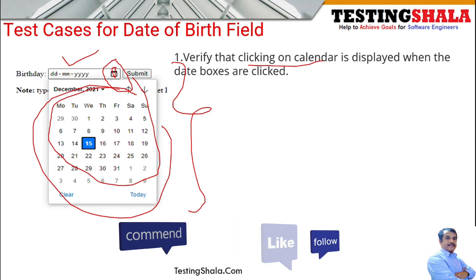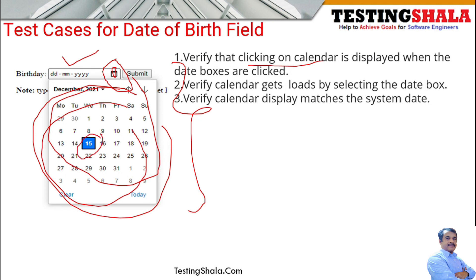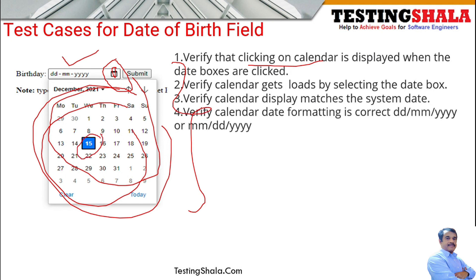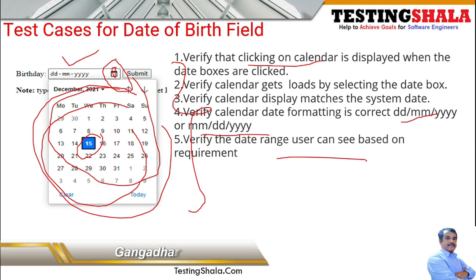Once the calendar pops up, the appropriate month and its dates should be displayed. This date should match your system date. As discussed earlier, this date format can be in any of the supported formats. If the user wants to enter a date of birth from 50 or 60 years back, they should be able to select that kind of date using this birthday field.